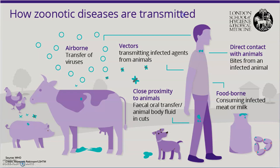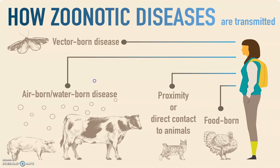How are zoonotic diseases transmitted? They are airborne, vector-borne, transmitted by direct contact with animals, foodborne, or through close proximity to animals. There are many ways through which disease from animals comes to humans — through foodborne routes involving microorganisms or protozoan cysts, direct contact such as bites, close proximity via oral or fecal routes, vectors, and airborne spread. The main classification includes vector-borne, airborne, waterborne, proximity or direct contact, and foodborne routes.